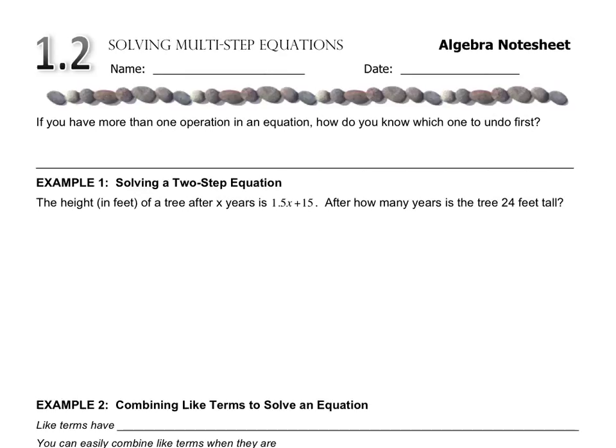So the question then comes up, if you have more than one operation, how do you know which one to undo first? Well, if you're solving an expression, you would use PEMDAS. So we're going to undo PEMDAS, or doing reverse PEMDAS.